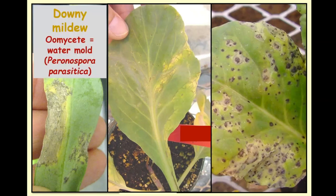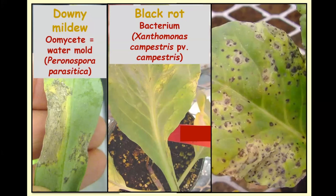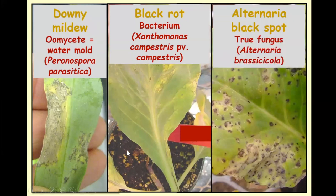The one on the left is downy mildew on brassicas, caused by Peronospora parasitica, which is a water mold — an oomycete. It is not a true fungus. So the types of fungicides you might use to control downy mildew are ones that need to be effective against oomycetes. The middle picture is black rot, caused by the bacterium Xanthomonas campestris pathovar campestris. Most fungicides do not work against bacteria, so you really don't want to be using the wrong product against black rot. The picture on the right is Alternaria black spot, caused by the true fungus Alternaria brassicicola. If you wanted a prescription for treating these diseases, it's really important to know which one you have, because you would use a very different product for each.